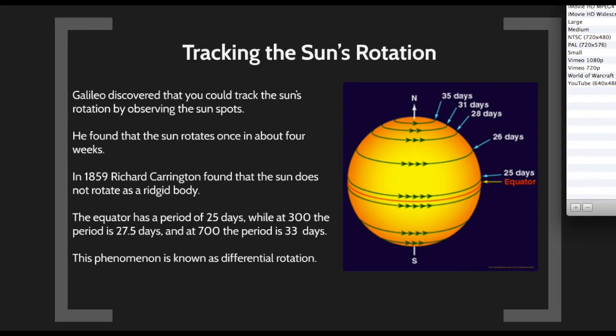Watching the sunspots, we can see the sun rotates. Galileo was the first to discover this. By tracking sunspots, he found the sun rotates once every four weeks. In the 1900s, Richard Carrington found the sun doesn't rotate as a solid ball. Different parts rotate in different periods. The equator has a period of 25 days, while at 30 degrees the period is 27 and a half days. At 70 degrees, the period is 33 days. The closer to the equator, the greater the rotation rate.